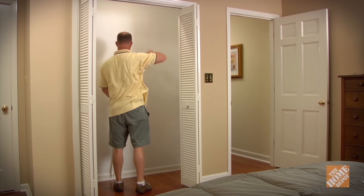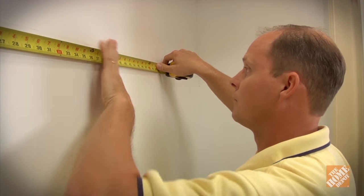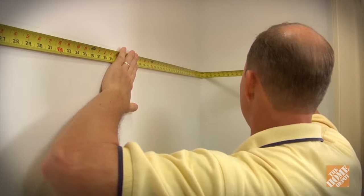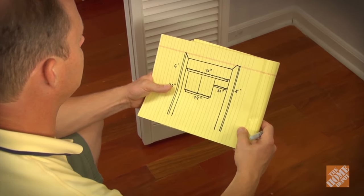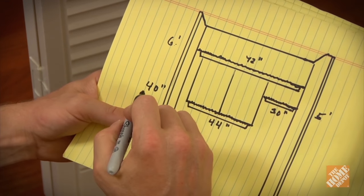Start by measuring the dimensions of the closet. Be as accurate as you can and make sure you get the depth, the width, and the height. Then design a layout to fit your needs. Be sure to include the length of each piece and the desired height for each shelf.